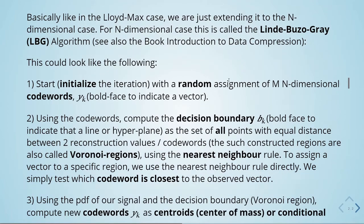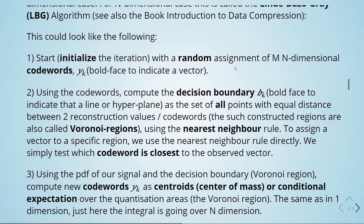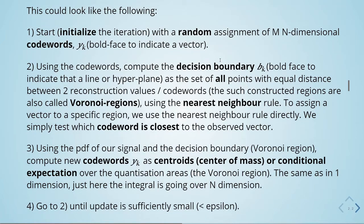The Linde-Buzo-Gray algorithm looks like the following. We initialize the iteration with a random assignment of m n-dimensional code words, y of k — which is a vector. Then, using the code words, we compute the decision boundary b of k as the set of all points with equal distance between two code words. We then use the nearest neighbor rule. Such constructed regions are also called Voronoi regions. To assign a vector to a specific region, we use the nearest neighbor rule — we simply test which code word is closest to the observed vector.